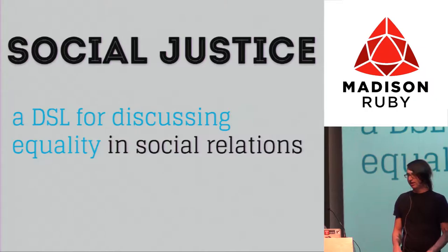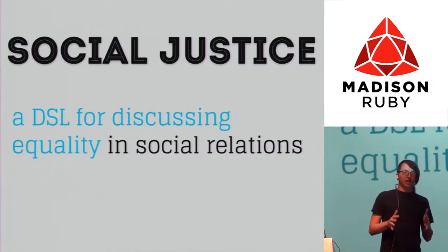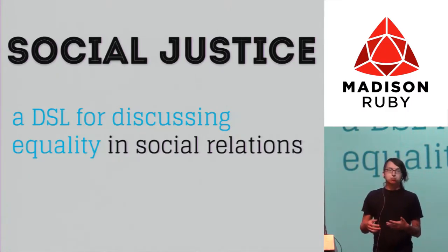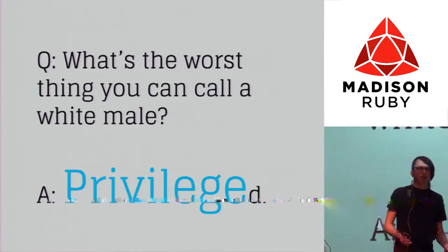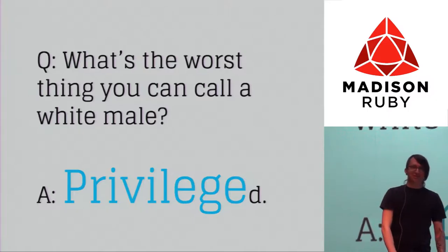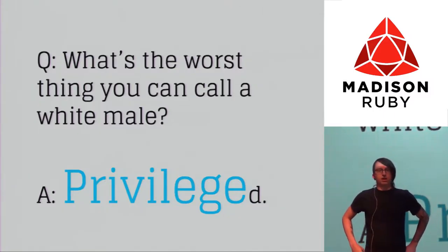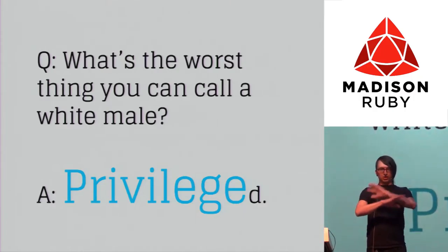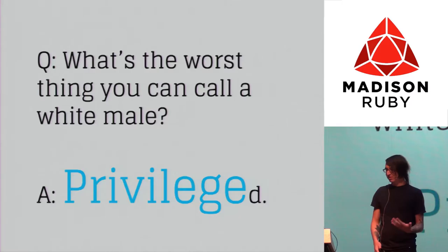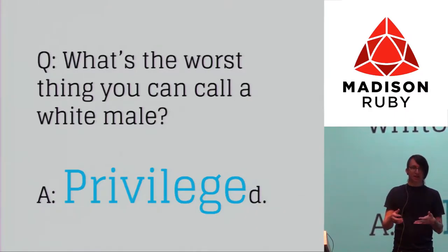There was a great Ask Reddit thread: 'What's the worst thing you can call a white male?' Someone said 'cracker' and people laughed it off. Then someone said 'privileged,' and all of a sudden everyone got really upset — 'I'm definitely not privileged, I worked really hard, I did all my homework in high school, maybe I went to private school, but that's because my parents worked really hard.' It's really amusing that what gets us upset is being accused of social privilege. This is the most key cornerstone concept to understanding social inequality: privilege.